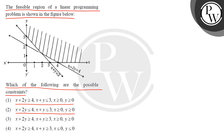Option 3 is x plus 2y is greater than or equal to 4, x plus y is greater than or equal to 3, x is greater than or equal to 0, y is greater than or equal to 0. Fourth option is x plus 2y is greater than or equal to 4, x plus y is greater than or equal to 3, x is less than or equal to 0, y is less than or equal to 0.